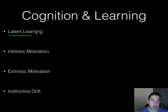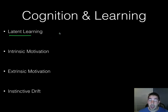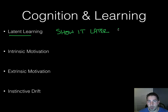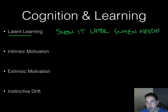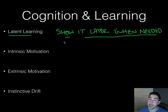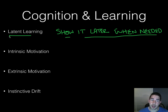Latent learning means you learn something from watching or observation — maybe from your parents or TV — and you don't show it until later, when necessary. For example, you might know how to wash the dishes correctly from watching your parents, but you never demonstrated that until you actually had to do it yourself. That would be latent learning — you show it later after a period of time.